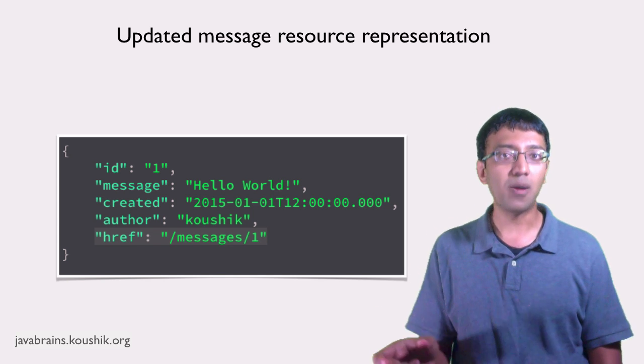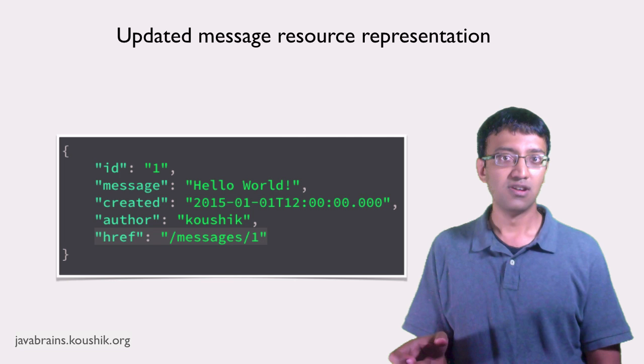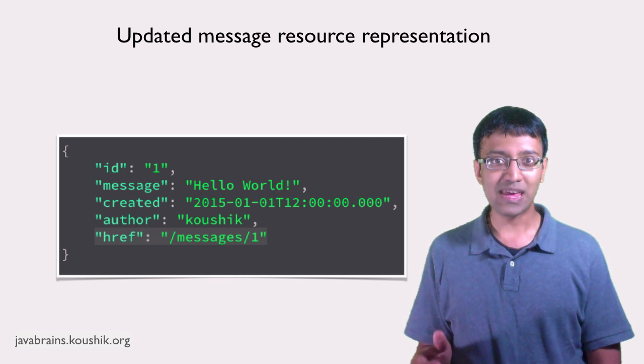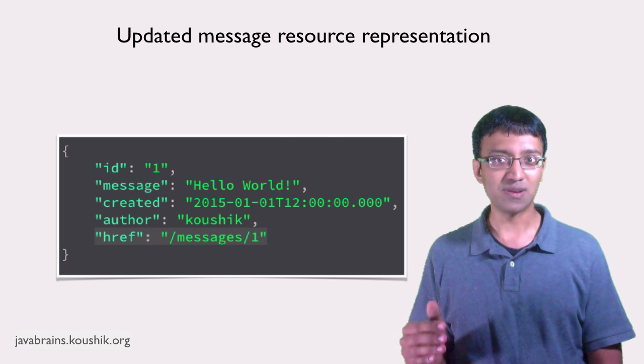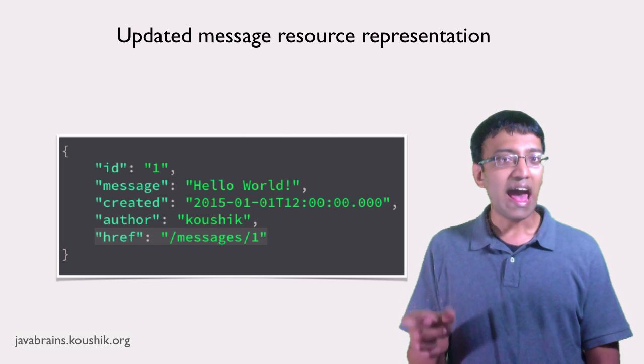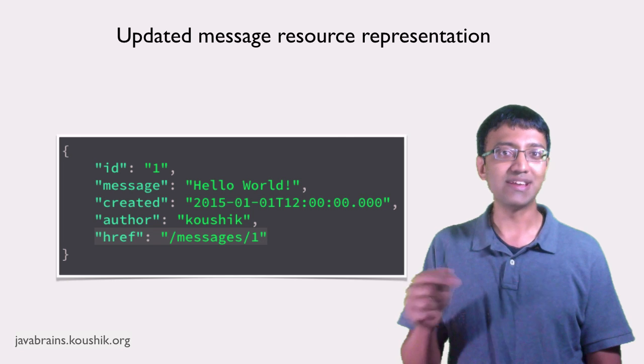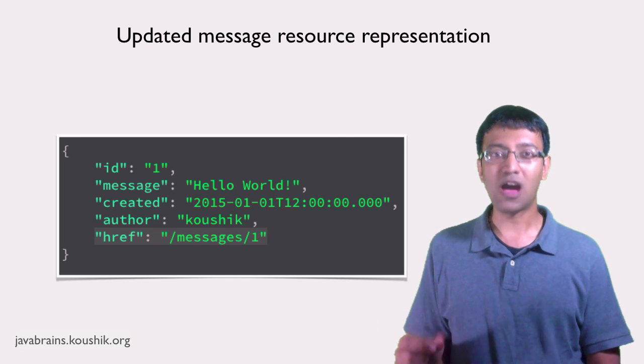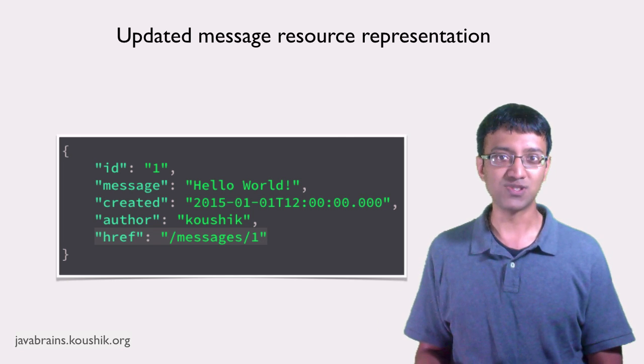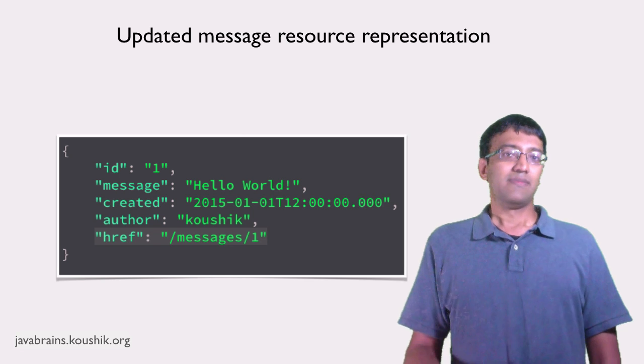If this were to be the kind of response for every message in slash messages, then the client wouldn't have to do any URI construction. They won't have to construct the URI like we just discussed. The resource URI is one of the properties of the resource. So if you were to design an API, it's such a way that every resource representation has a property, which is the instance resource URI to itself. Think about how convenient it would be for the client to use, right?